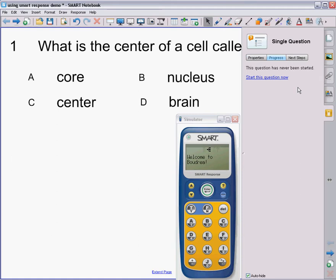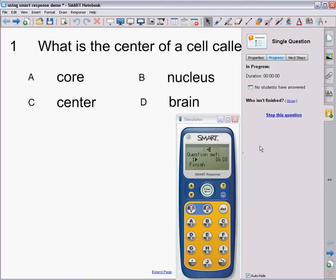When you start the question on the remote, the students will now get, it says question set, tells them they have one question to answer. They have choices between A and D. So they're going to pick whichever choice they think is the correct answer. So in this case, the correct answer would be B and the students would need to hit enter.